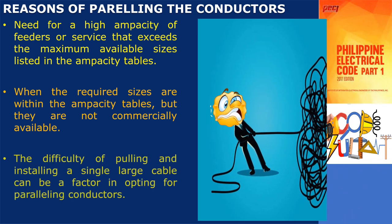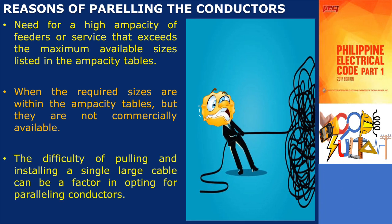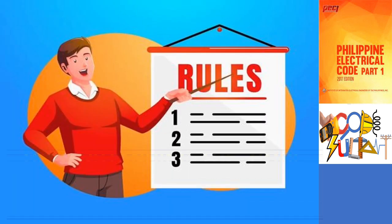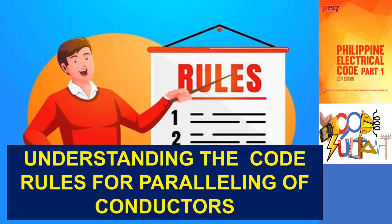Furthermore, the difficulty of pulling and installing a single large cable can be a factor in opting for paralleling conductors. Large cables can be challenging to handle, maneuver, and install due to their size and weight. Paralleling smaller conductors provides more flexibility and ease of installation while still achieving the required ampacity. For these reasons, a total understanding of the paralleling requirements permitted in the electrical code is necessary before attempting to design a large electrical system or install these conductors.